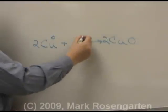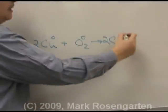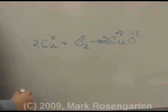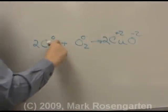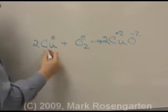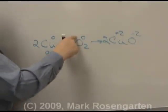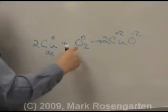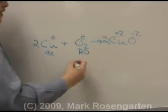Both copper and oxygen start off with no charge because they're not in compounds. In the compound, their charges are plus two and minus two. Because copper became more positive in charge, it lost two electrons — that's oxidation. Because the oxygen went from zero charge to a minus two charge, it gained electrons and therefore underwent reduction.